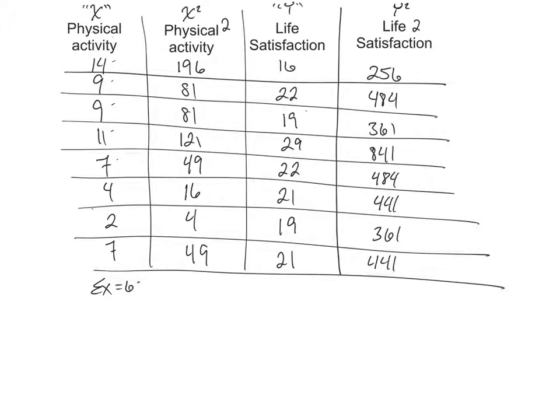Sum of X equals 63, and then my sum of X's squared is 597. I'm going to do the same exact thing over here with my Y's. So my Y, sum of Y becomes 169.